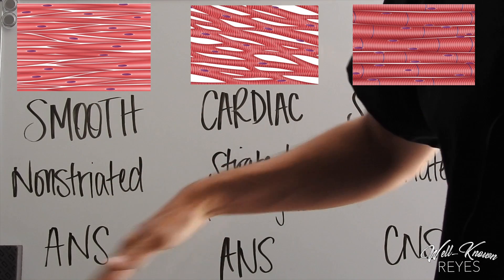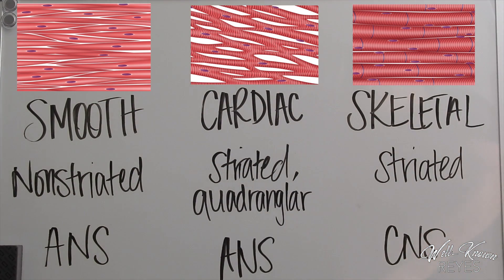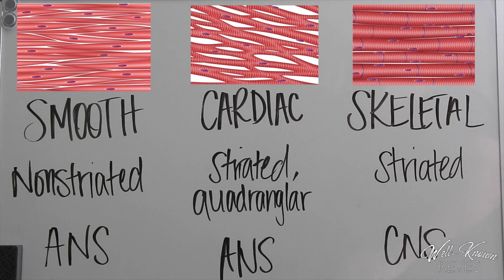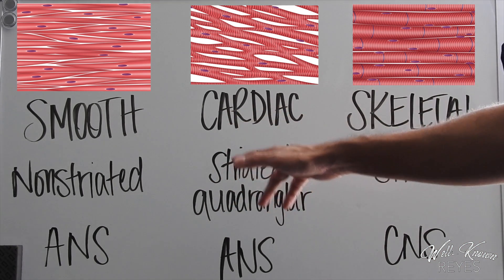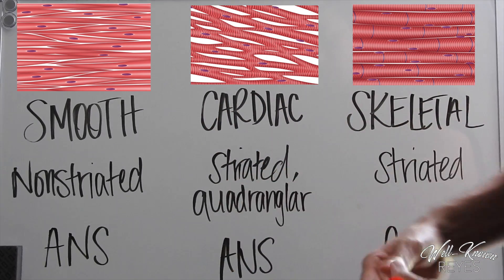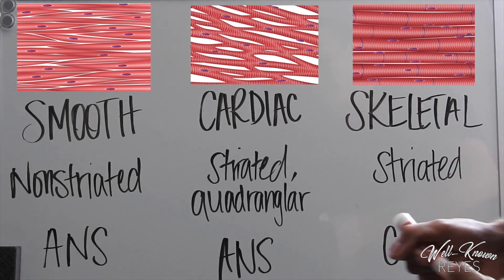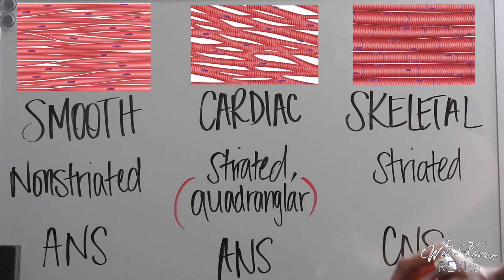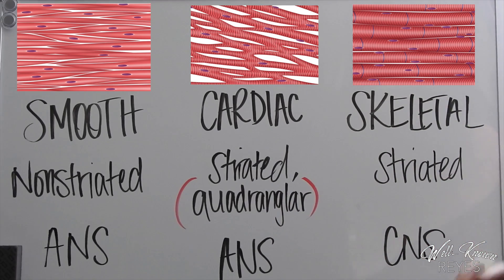Now let's move on to cardiac muscle tissue. This one is striated, which means it is striped underneath the microscope, and it is also quadrangular. That's very important—make sure you know that: quadrangular.